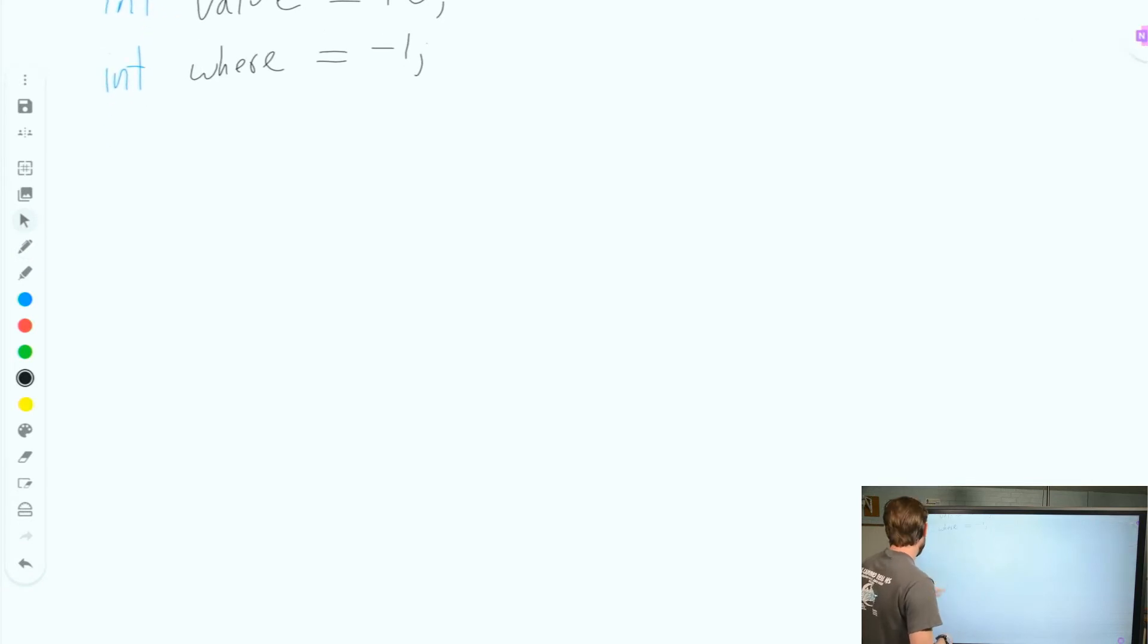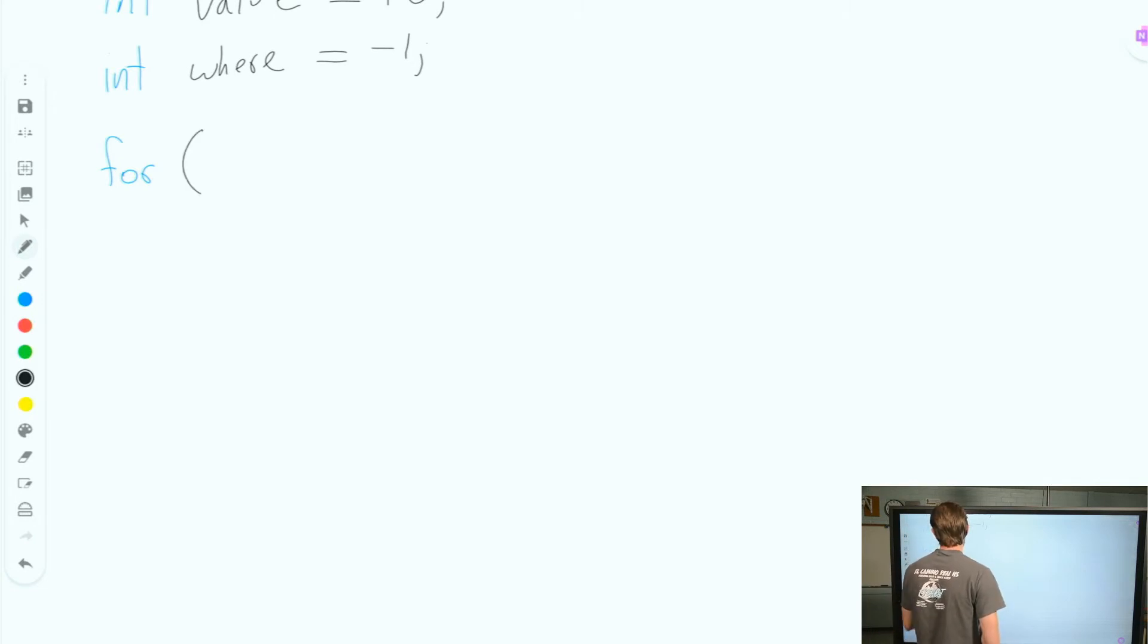Now we're going to use our friend, the for loop. This is where for loops become super powerful. So in our for loop, we're going to go ahead, int, and I'm going to call this index because my sloppy handwriting, it'll be hard to tell what an i is. So int index equals zero.